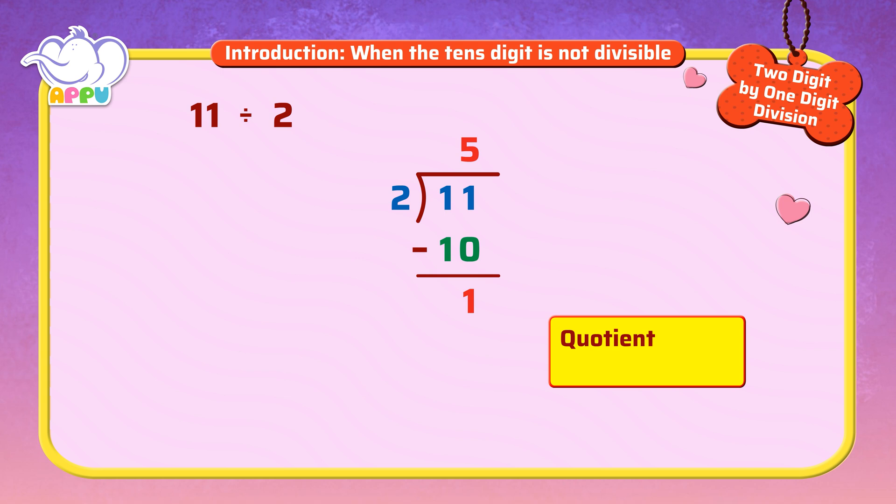Five is called the quotient and one is called the remainder.